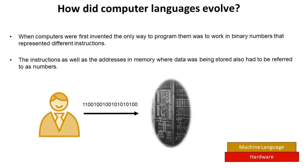So how did computer languages evolve? Well when computers were first invented the only way to program them was to work in the actual binary numbers that represented different instructions. Those instructions as well as the addresses in memory where data was being stored also had to be referred to as numbers.